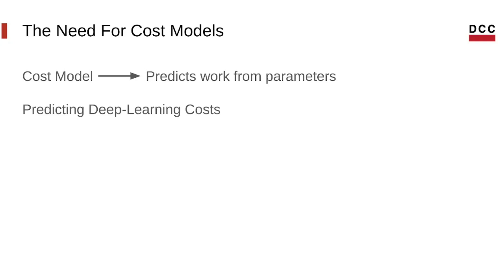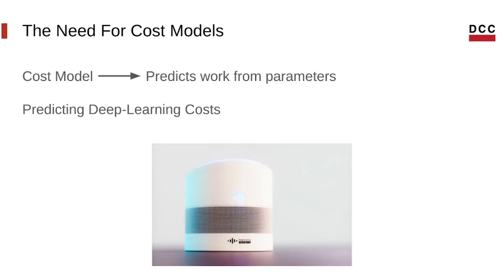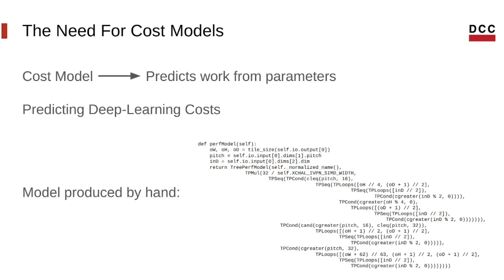Cadence Design Systems, which is the company that sponsored our project, has this problem where they have different implementations of the same deep learning model and they want to choose the most efficient one. They have devices called DSPs that do speech recognition and image recognition using neural network models. So they want to pick the most efficient implementation of a deep learning model to make these devices as efficient as possible, and they use cost models that look like this.